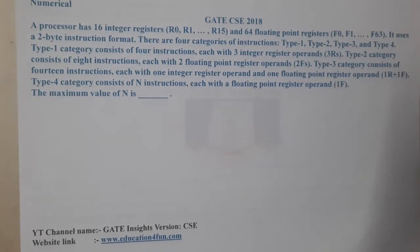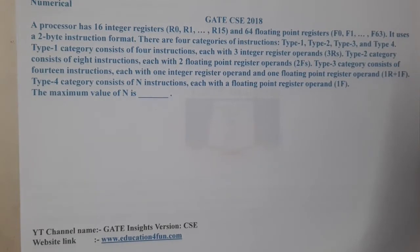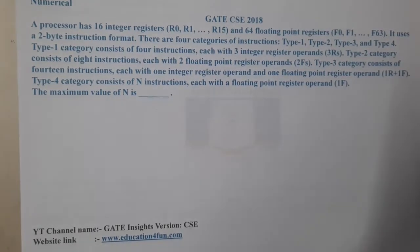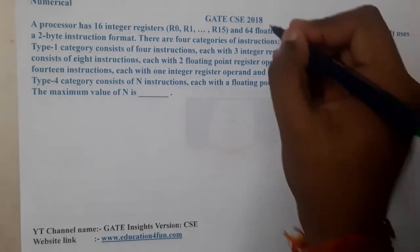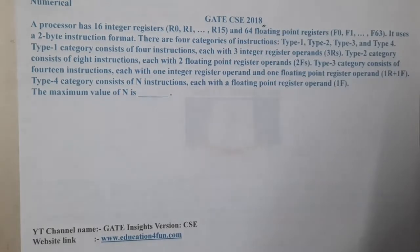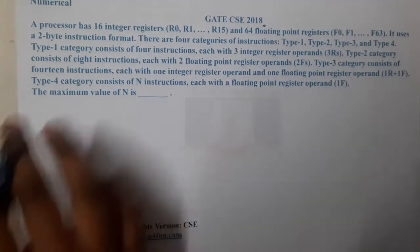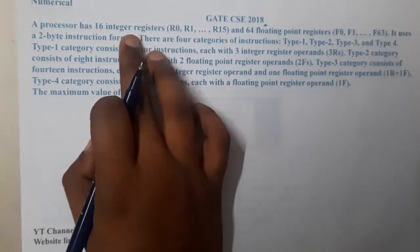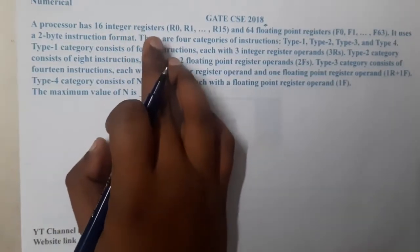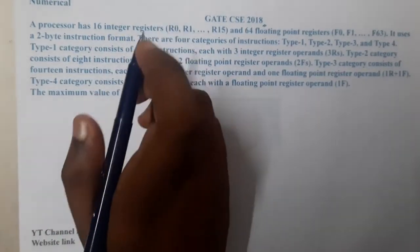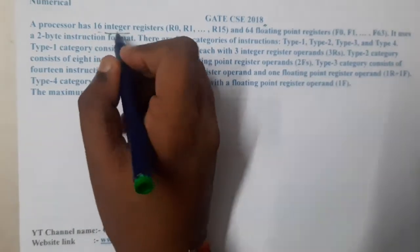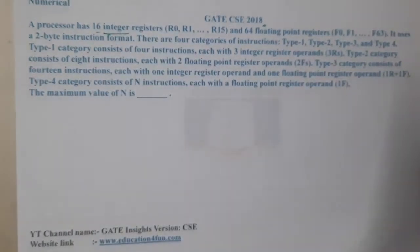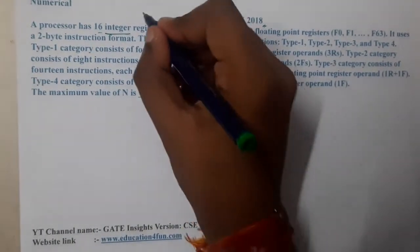Hello guys, we are back with our next lecture. This question belongs to GATE CSE 2018. The question states that a processor has 16 integer registers — they gave clearly that those are integer registers only.